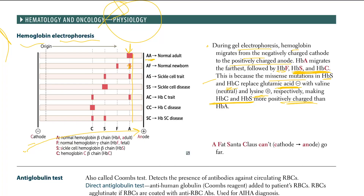So who has more positivity? HbC and HbS. Opposite charges attract and like charges repel. Because we have the positive anode, and HbC and HbS also carry positive charge, they repel each other. So they cannot reach the first position — they cannot come into very close proximity to the positive anode. That's why HbA, being more negative, can migrate the furthest toward the positive anode.